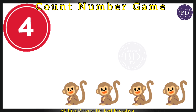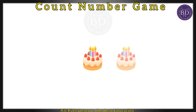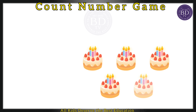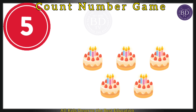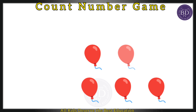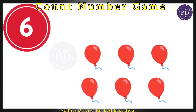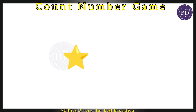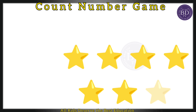1 2 3 4 — 4 monkeys. 1 2 3 4 5 — 5 cakes. 1 2 3 4 5 6 — 6 balloons.